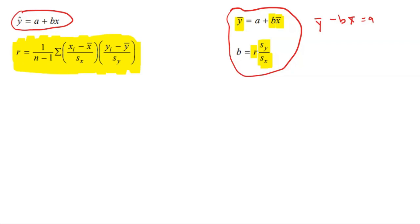One more thing: the only other formula you need to know for exploring two variable data is the formula for residual. They do not give you this on the formula sheet, but a residual is simply the actual Y value minus the predicted Y value. It's the vertical distance between the actual Y and the predicted Y from the regression equation. It's a pretty easy formula, but you may definitely need it.